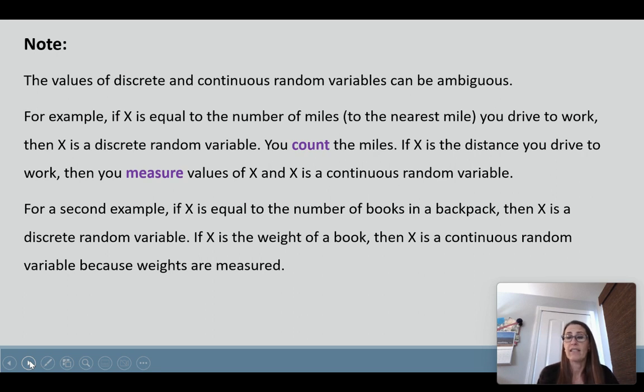Another example of this is if you let X equal the number of books in a backpack, then X is a discrete random variable because you're counting the number of books. But if you define X to be the weight of the backpack or the book, then it's a continuous random variable because weights are measured. So just a little bit of difference to keep in mind. How you define it is really important.